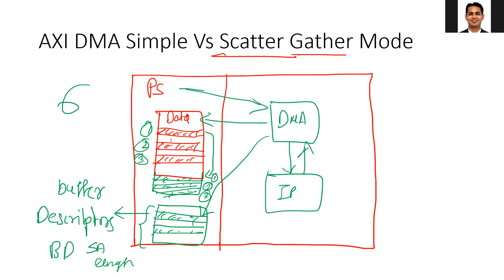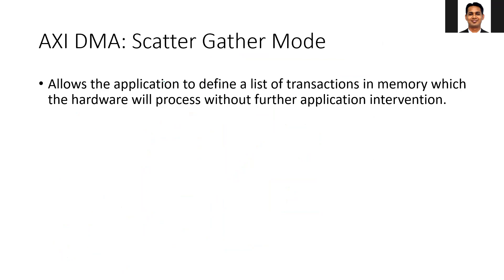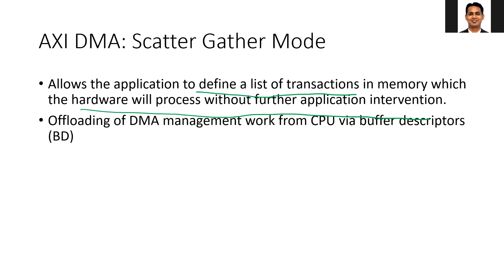This is quite useful when you want to transfer large chunks of packets or non-contiguous data, and when the simple transfer is not efficient. The scatter-gather mode allows the application to define a list of transactions in memory, which the hardware will process without further application intervention. The CPU just tells the DMA: here are the descriptors, perform these transfers, I don't need to intervene further. You just need to create the buffer descriptor and give its address to the DMA, and the DMA takes care of the rest.